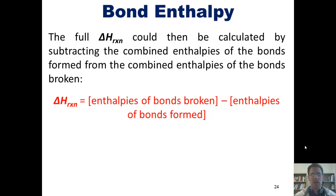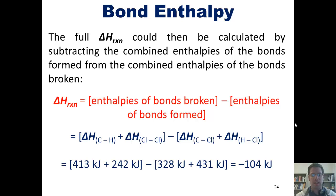For our previous example, that would be the sum of the enthalpies of a carbon-hydrogen bond and a chlorine-chlorine bond, and then subtracting from that the combined enthalpies of a carbon-chlorine bond and a hydrogen-chlorine bond. Using the table I showed you before, we can get those numbers as being the following and determine that the overall delta-H for this reaction is negative 104 kilojoules, which means that it's an exothermic reaction.